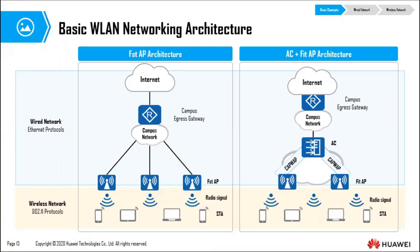There are three types of access points. Fat APs are like home wireless routers — they must be configured individually and work independently. Fit APs are used on large enterprise networks and must work with an access controller; you configure them from a centralized place. Cloud APs are managed by a cloud management platform — essentially, their access controller is on the internet.